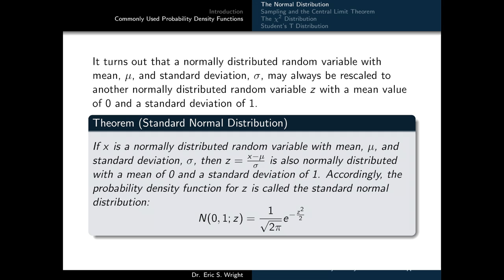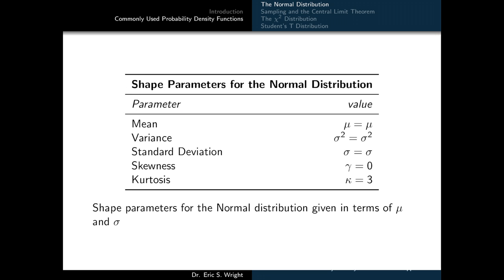When we get into random sampling a little bit later, we'll see that the standard normal distribution and a z random variable can be particularly useful there. The shape parameters for the normal distribution are fairly simple: the mean of the normal distribution is just the mean parameter, the variance is the square of the standard deviation parameter, and the standard deviation is its own parameter. Skewness is equal to 0 because the normal distribution is perfectly symmetric about its mean.